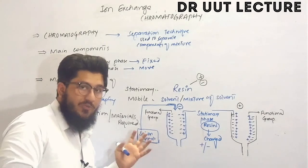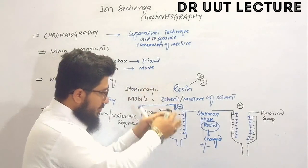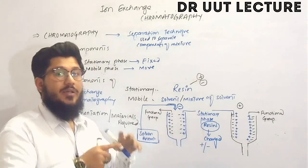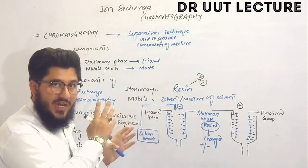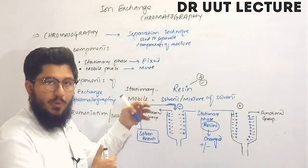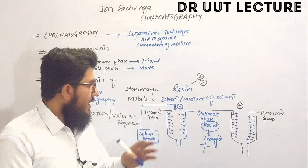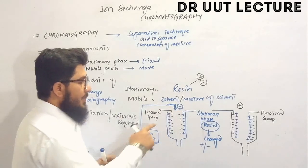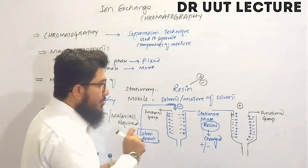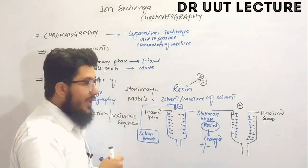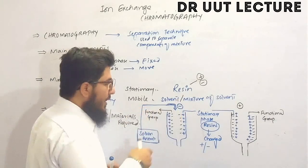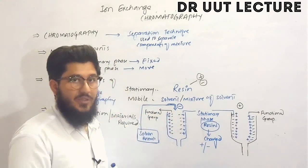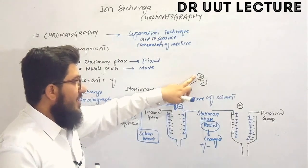From the solvent reservoir, we run our mobile phase through the stationary phase. Meanwhile, we load our sample onto the stationary phase — or in some cases, we mix the mobile phase and sample in the solvent reservoir and run them together. In other procedures, we first load the sample and then run the mobile phase over the loaded sample.